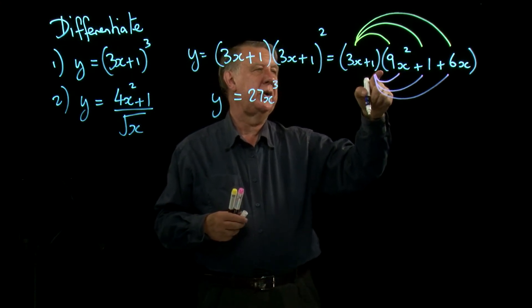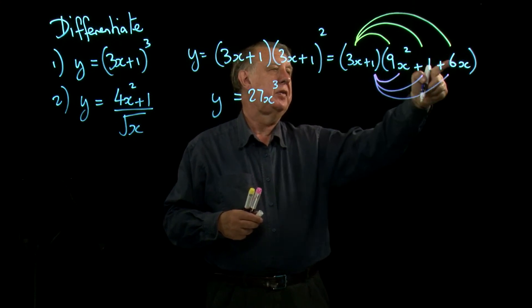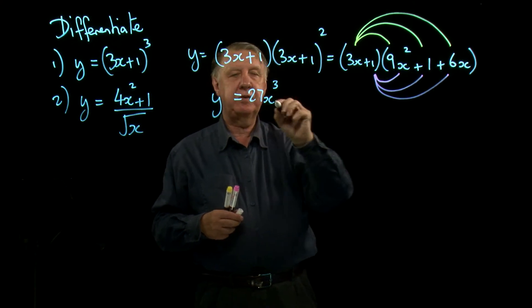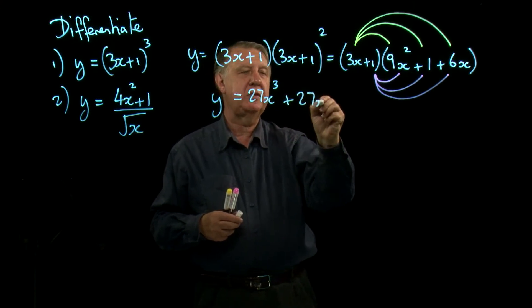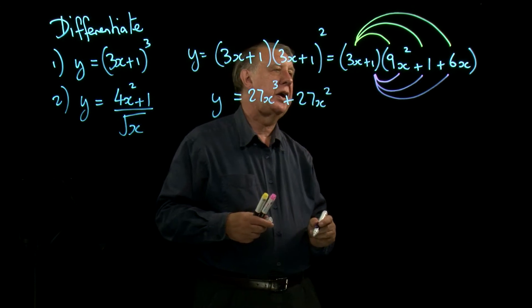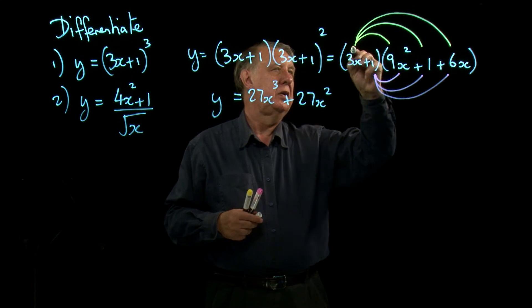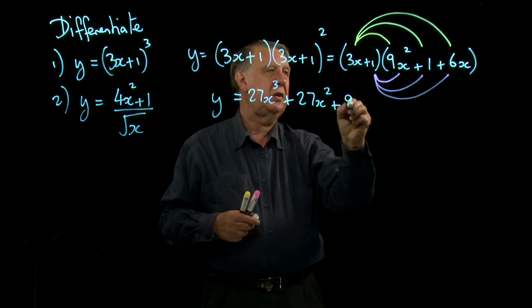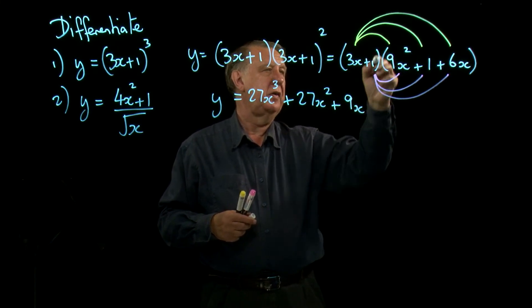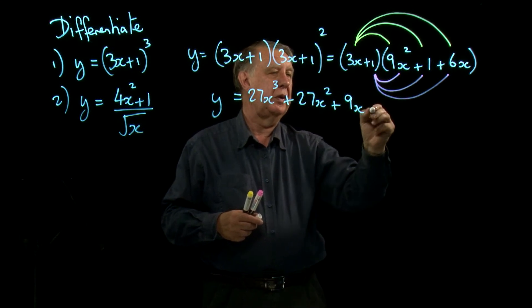We'll have 9 here, and we'll have 18 there, so we'll have 27x squared. How many x's will we have? We'll have 6x there, and 3x there is 9x, and then the number, that root there plus 1.